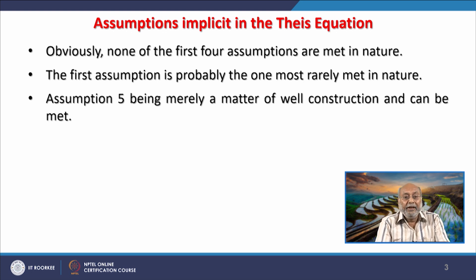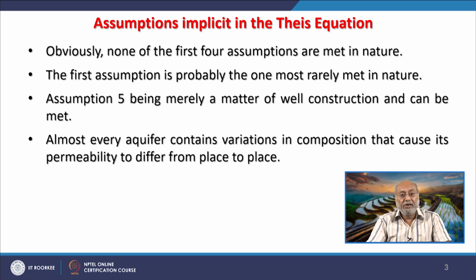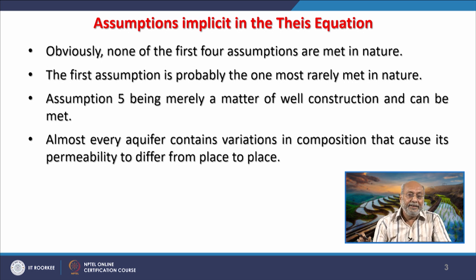Assumption five — that the well penetrates the entire thickness of the aquifer — is merely a matter of well construction and can be met. Almost every aquifer in nature contains variations in composition, which causes permeability to differ from place to place. When these rocks are being formed, the supply of sediments, pressure conditions, and temperature conditions are not the same. Therefore, within the same rock type there will be variations, and a sedimentary rock in infinite extent will not have all the same characteristics. This varies with space and with depth.